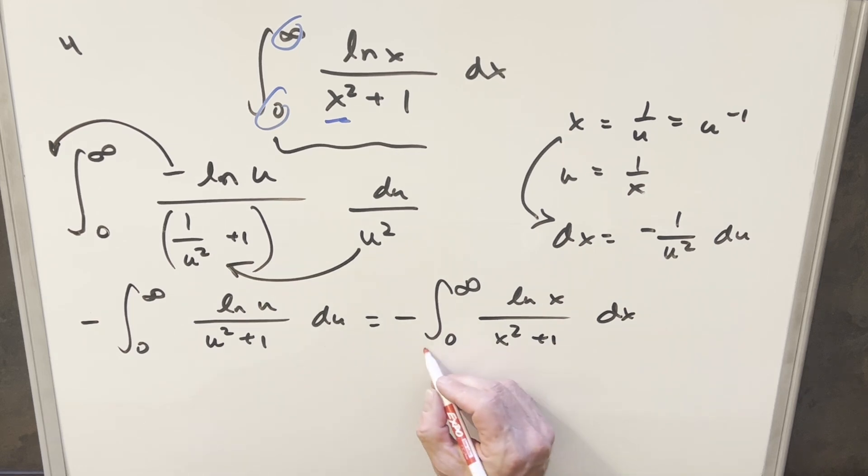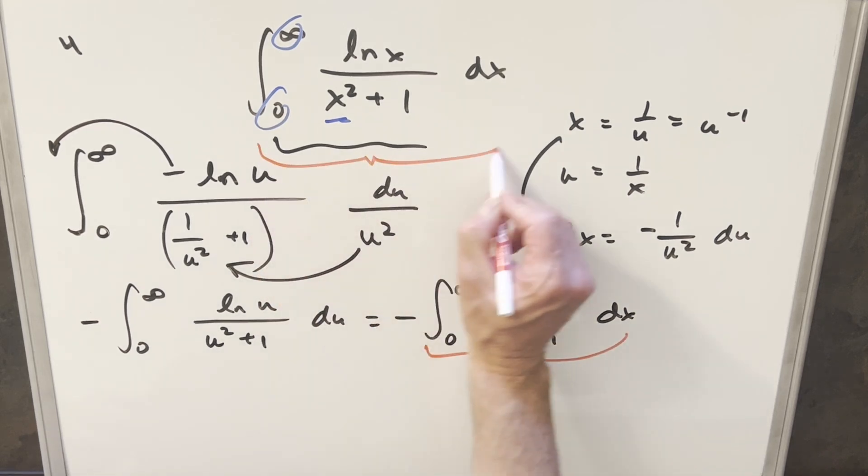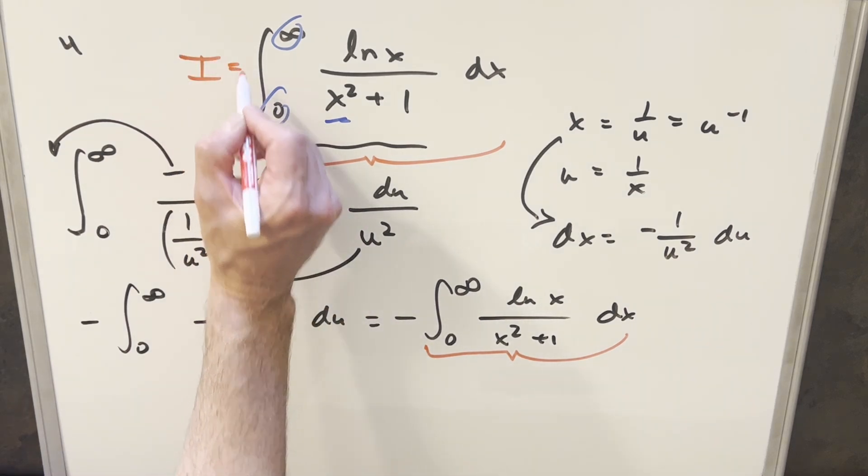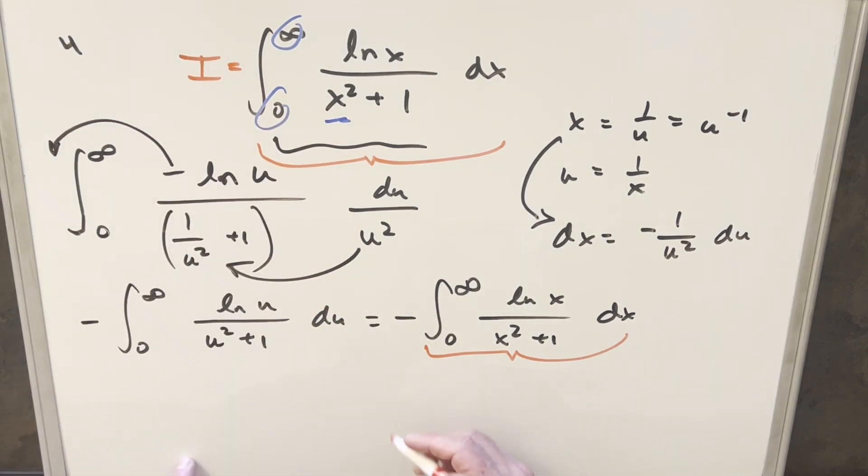And the thing you'll notice is what we have right here, this is exactly what we have right here. So what I can do is create a label on this. If we call this I, well here we've got this minus sign. So I can call this down here, minus I.